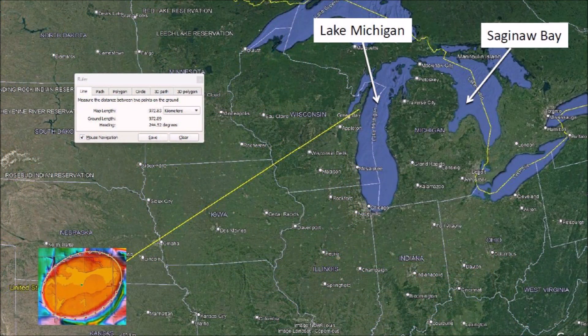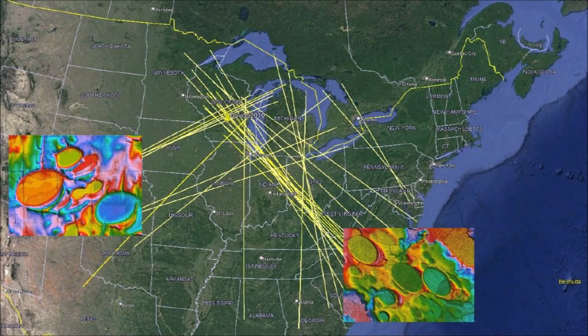Extending the azimuth as a Great Circle trajectory, we find that the distance of the basin from Lake Michigan is 973 kilometers. Lake Michigan is the convergence point of many Nebraska Rainwater Basins and Carolina Bays, but there are also some intersections at Saginaw Bay. The elliptical shape of these basins and the convergence of their major axes at the Great Lakes are interesting facts, but what do they mean?